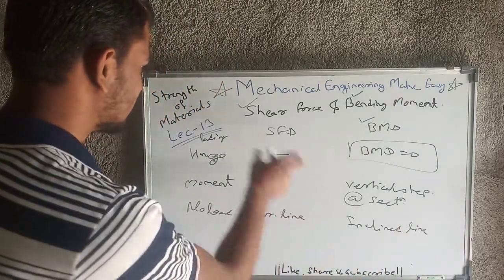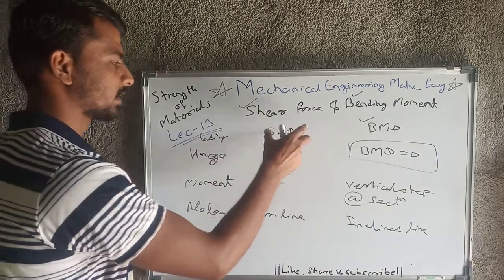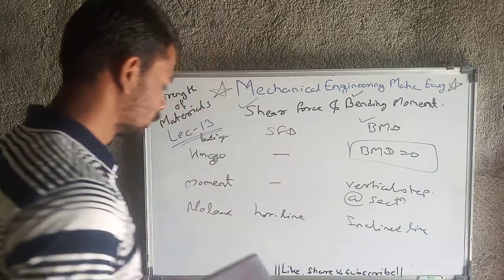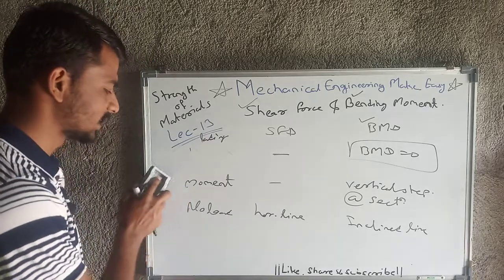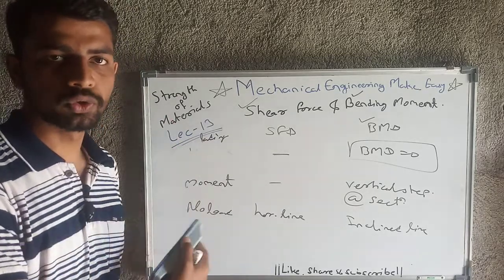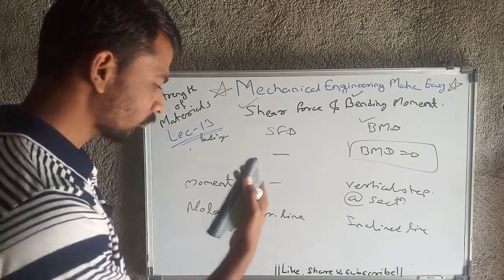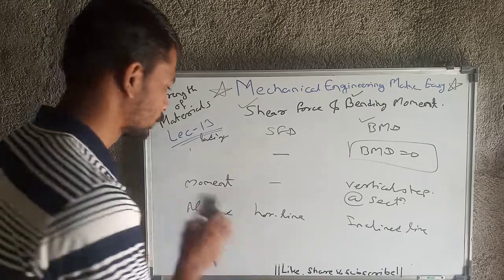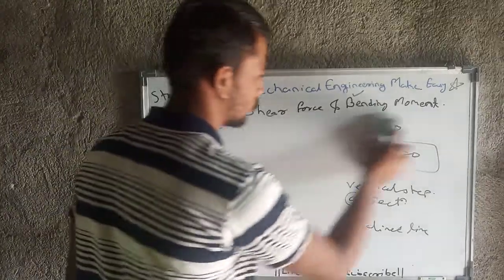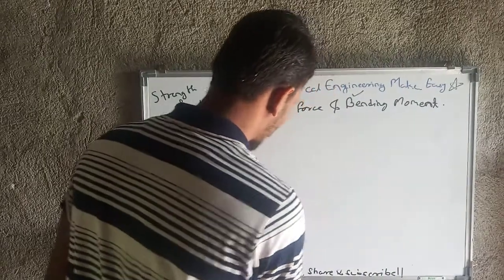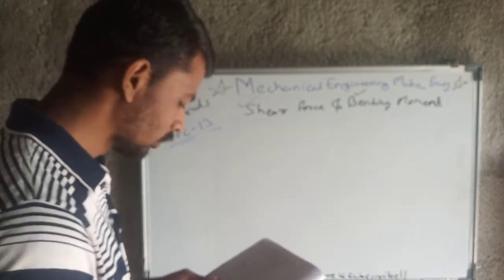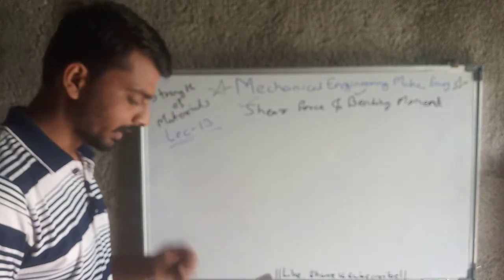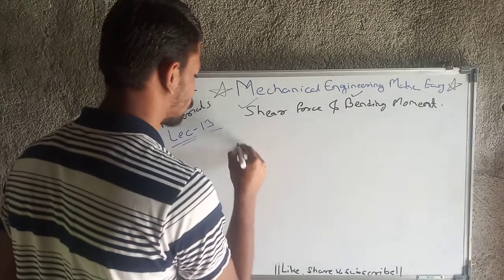These are the standard cases of loading and their variation in shear force and bending moment diagrams. The hinge concept and parabolic load are not too important for exams. The five important cases are: point load, UDL, UVL, bending couple, and no load. Do not go into too much detail on parabolic loading, as it may cause confusion.